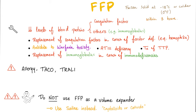Contraindications: do not give fresh frozen plasma as a volume expander. For example, if a patient had a car accident and is bleeding — hemorrhagic shock — don't replace volume with fresh frozen plasma. You have saline for this. It's cheaper, more abundant, and unlike fresh frozen plasma, saline does not contain these antigens and antibodies, so there is less risk of allergy. Fresh frozen plasma is a scarce resource, so we need to economize on its use. Saline, on the other hand, is just sodium chloride in solution — it's everywhere.